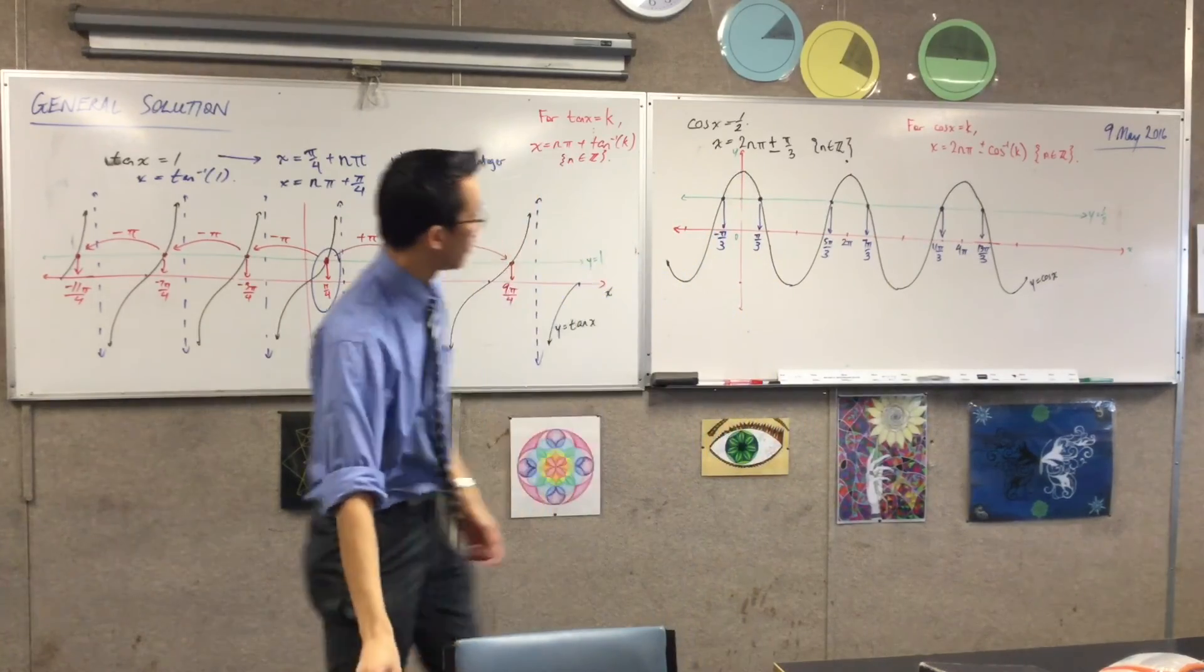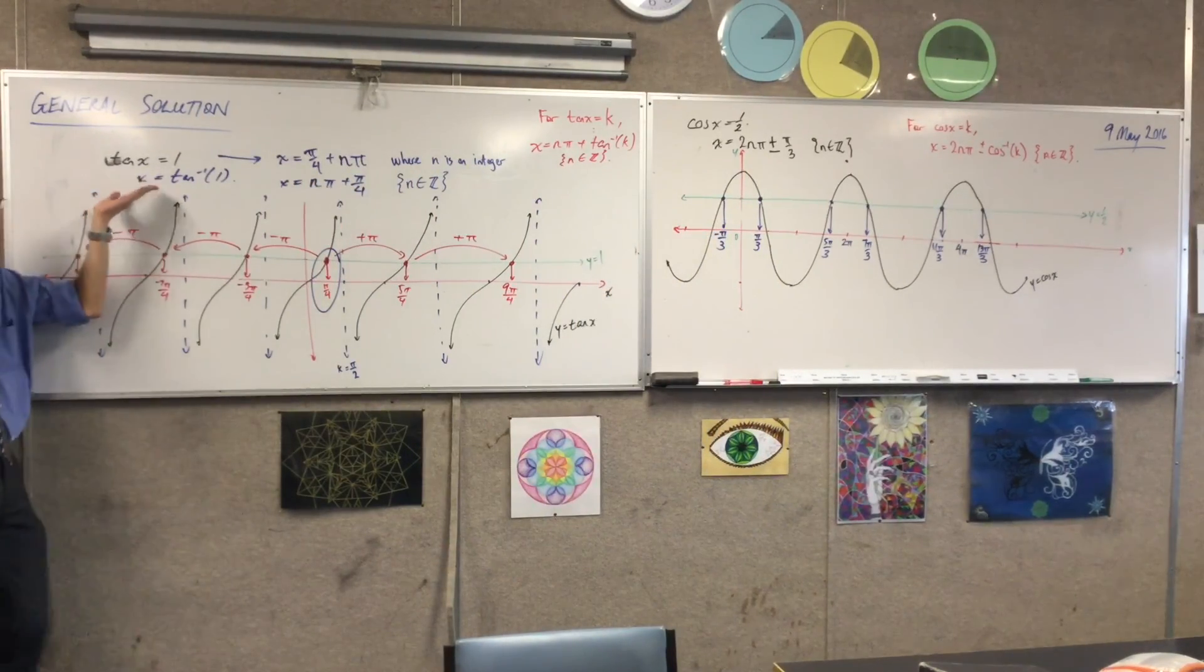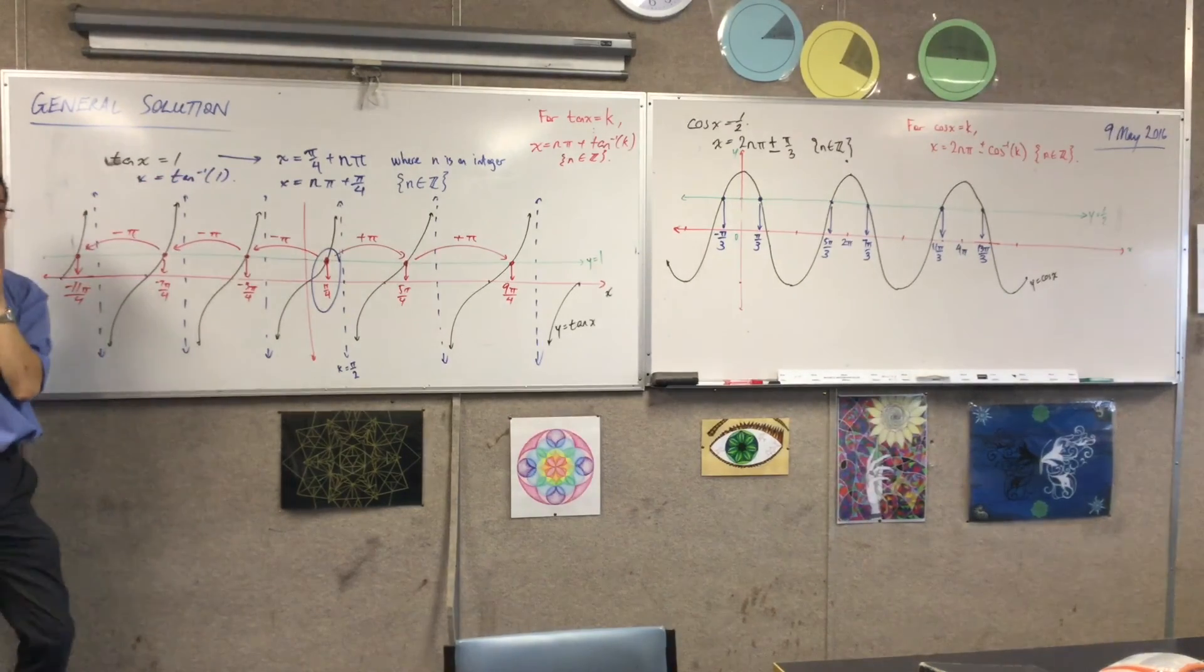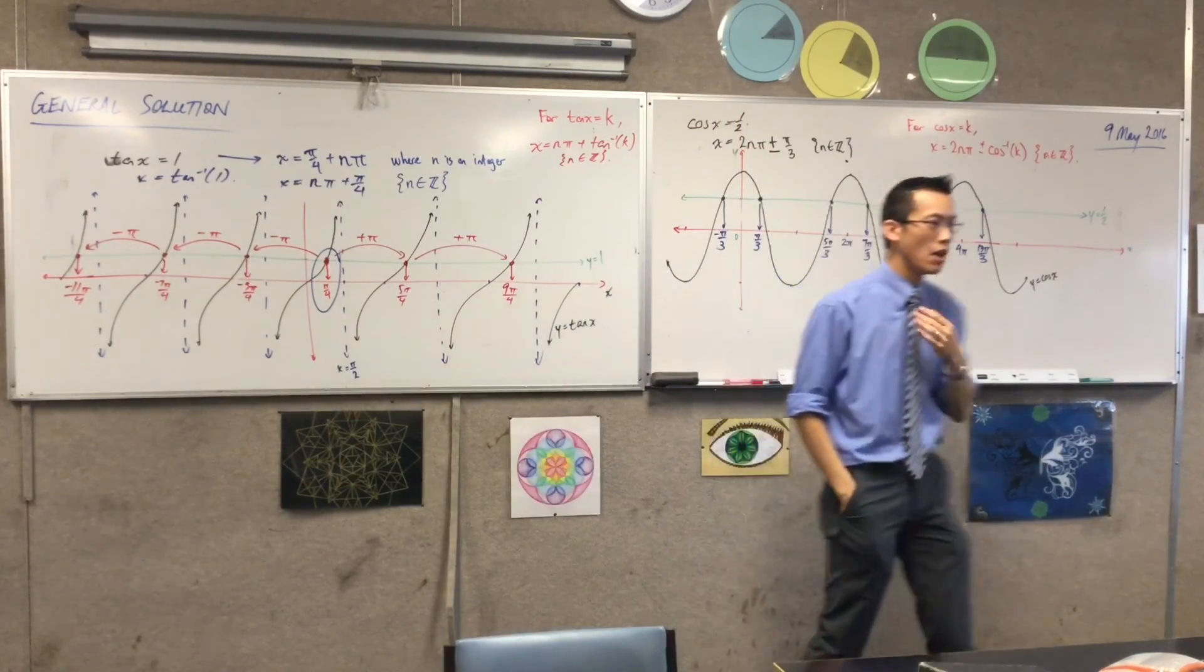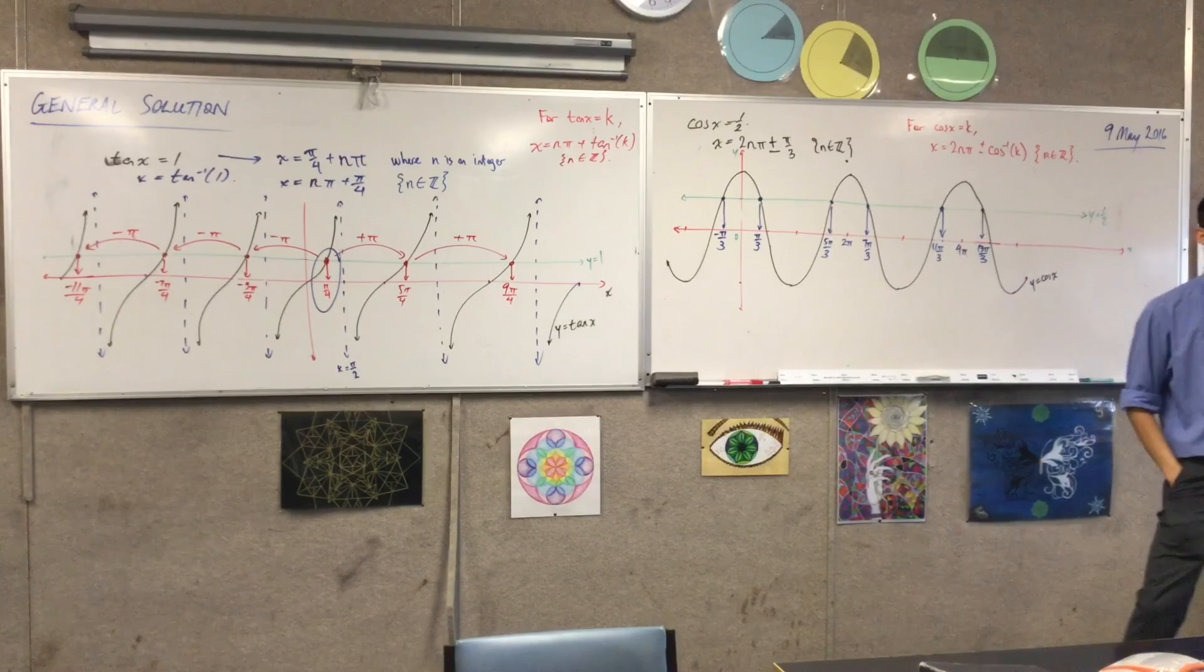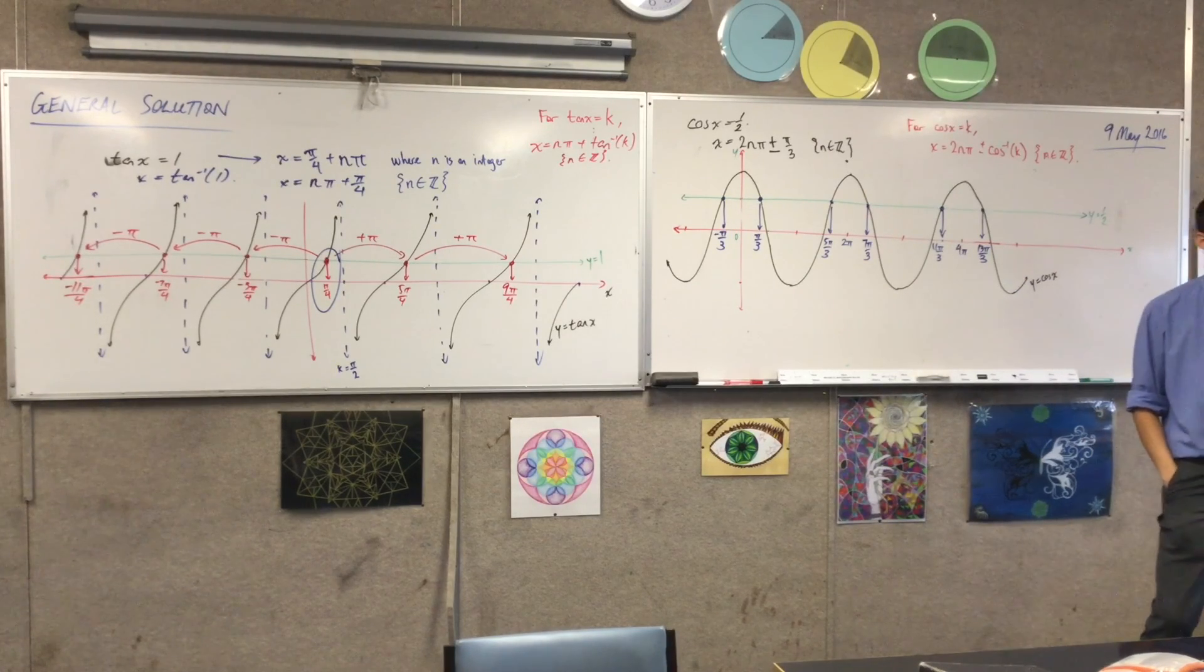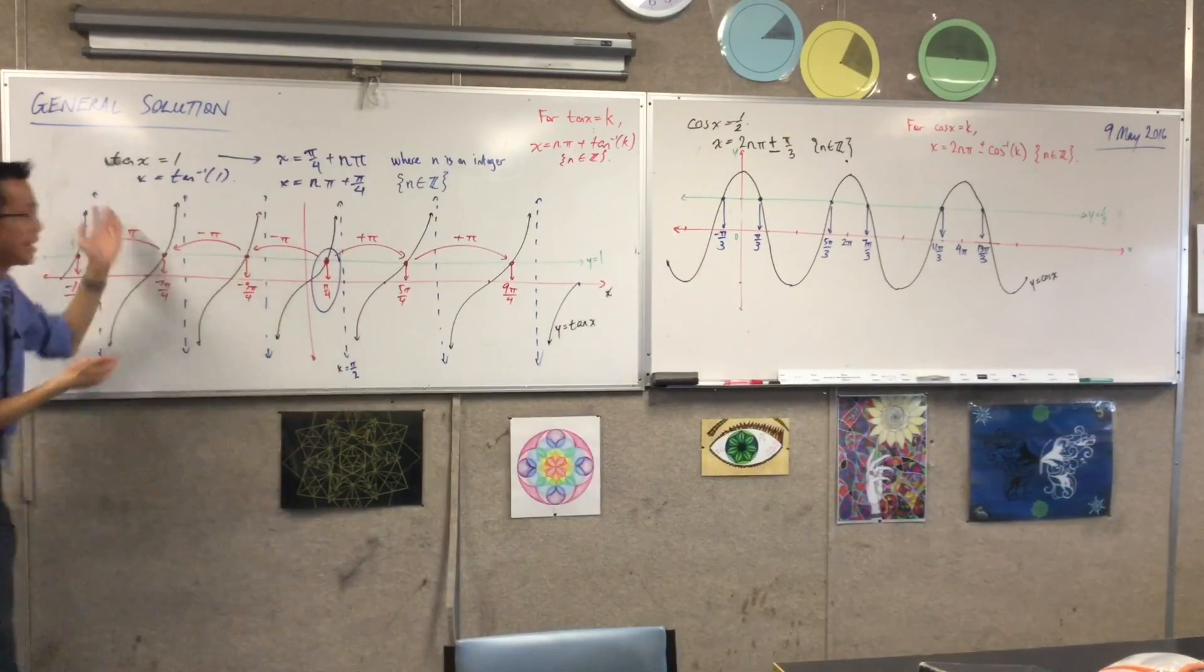So, I do also want to point out. So far, I've chosen nice, easy values that are all positive, right? Suppose I went over here and I said, can you solve for me tan x equals negative 1 instead? Or could I give you to solve cos x equals negative 1/2? Will our formulas still hold? Will they still work? Yeah. I think they will, right? Let's have a look at this case first.